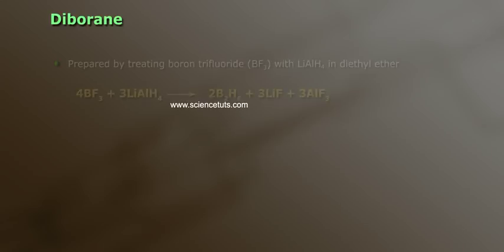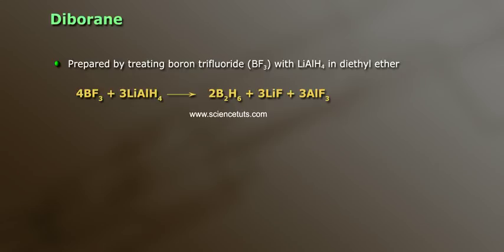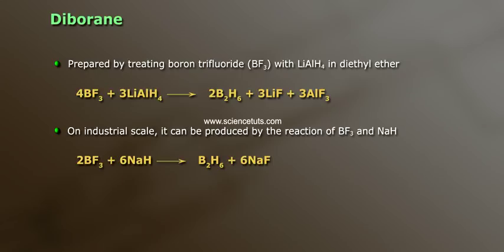Let us discuss about diborane. Preparation of diborane: it is prepared by treating boron trifluoride (BF3) with lithium aluminium hydride (LiAlH4) in diethyl ether: 4BF3 + 3LiAlH4 gives rise to 2B2H6 + 3LiF + 3AlF3. On an industrial scale, it can be produced by the reaction of BF3 and NaH: 2BF3 + 6NaH gives rise to B2H6 + 6NaF.